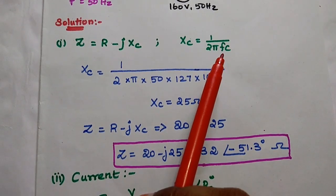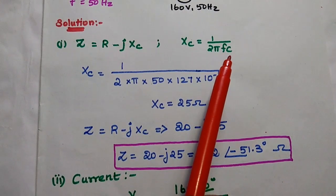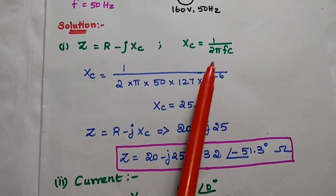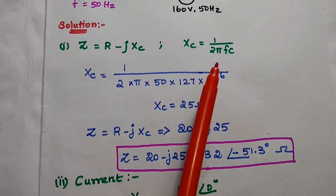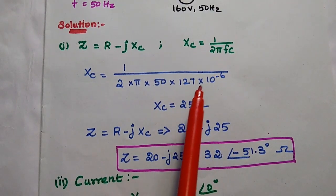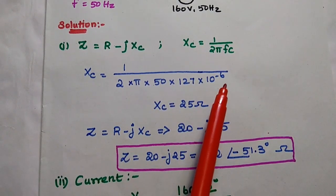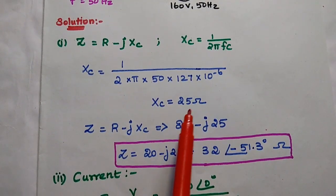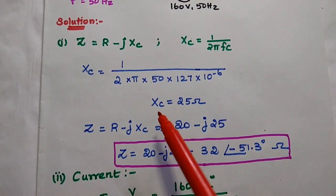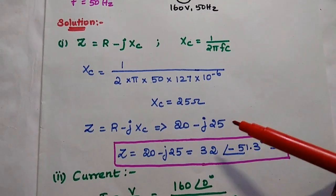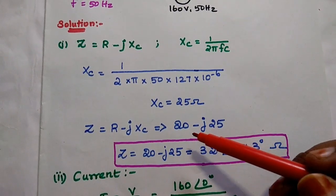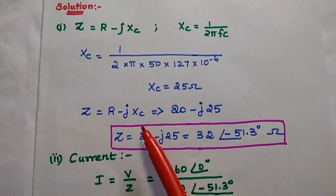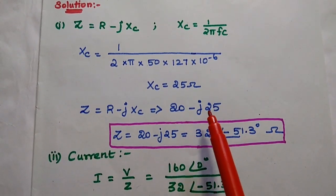We substitute the frequency and capacitance values: 1 divided by 2 times π times 50 times 127 times 10 to the power minus 6, giving XC equal to 25 ohm. So the impedance is Z = R minus j·XC, where R is 20 and XC is 25 ohm.